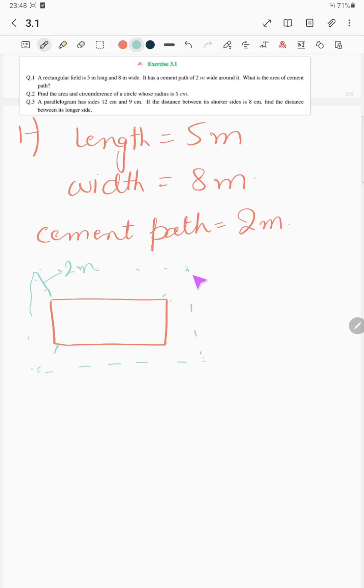So first of all we will find the area for the whole rectangle including the cement path. Area including cement path. And that would be, the length would become 5 plus 2 from this side and 2 from this side.